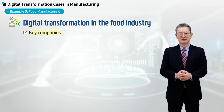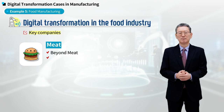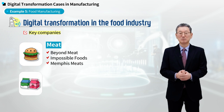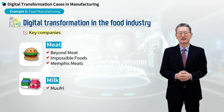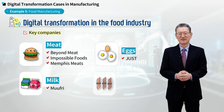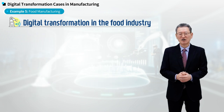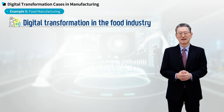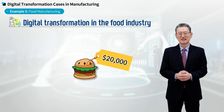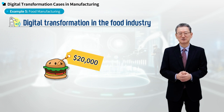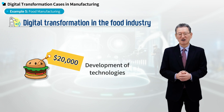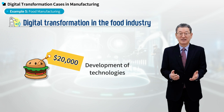There are many companies producing alternative meats, such as Beyond Meat, Impossible Food, and Memphis Meats. Mufri produces milk using only water, air, and protein. Just produces eggs, and Finless Foods fabricates seafood like salmon and tuna. The cost of lab-grown meat or seafood was initially very expensive — one hamburger produced by Beyond Meat was priced at $20,000. But due to the development of technologies, the cost has come down to become competitive. We will see a lot more of these developments in the near future.